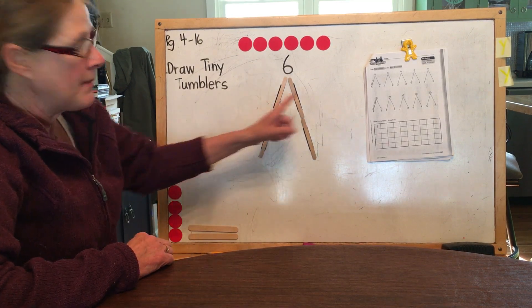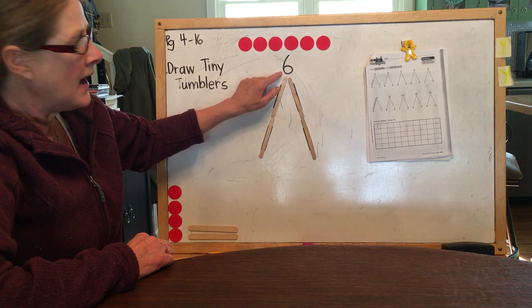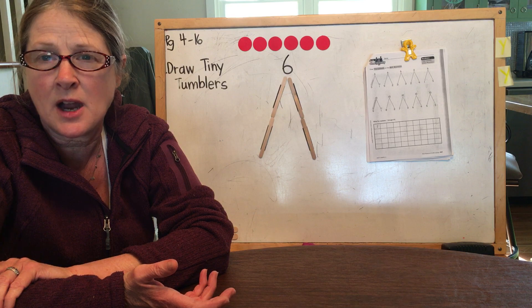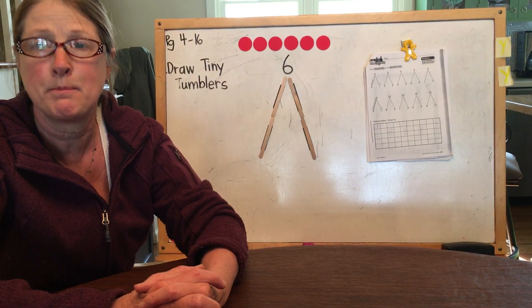So this is what a math mountain looks like. And notice at the top is the number six. Math mountains are named by their numbers. So this is the sixth math mountain.